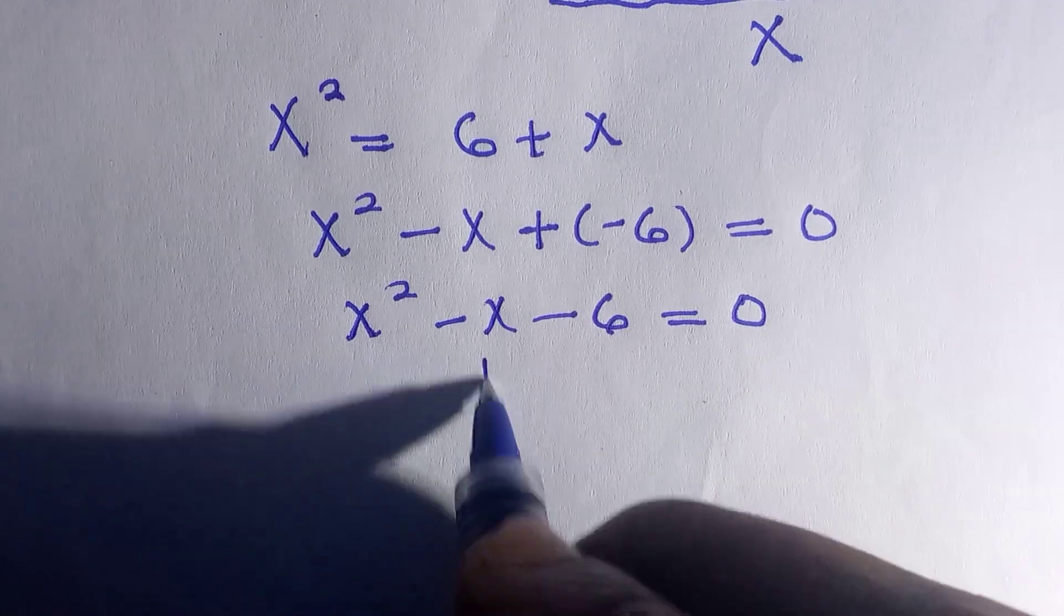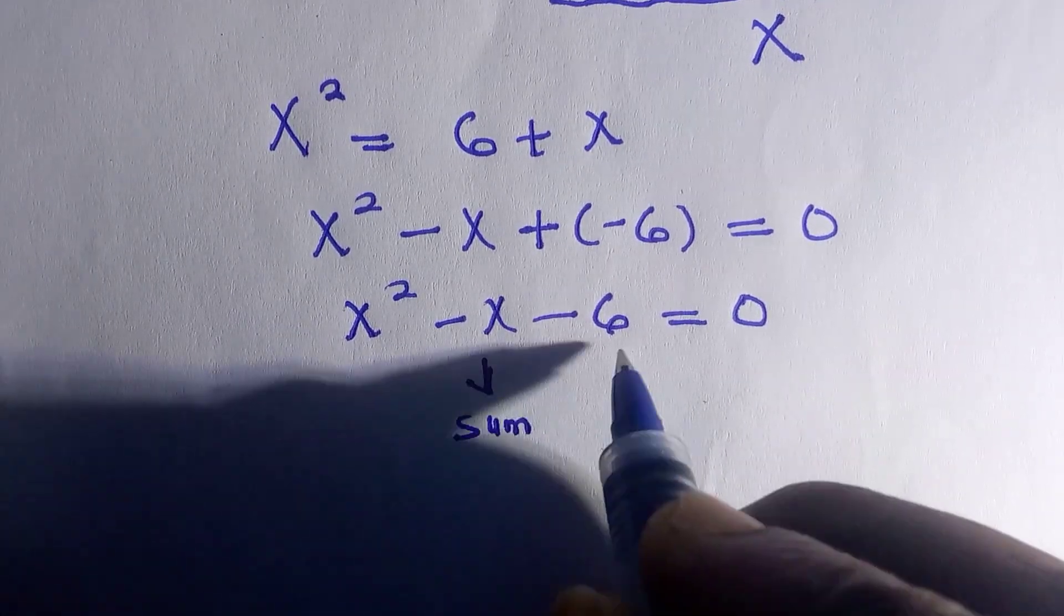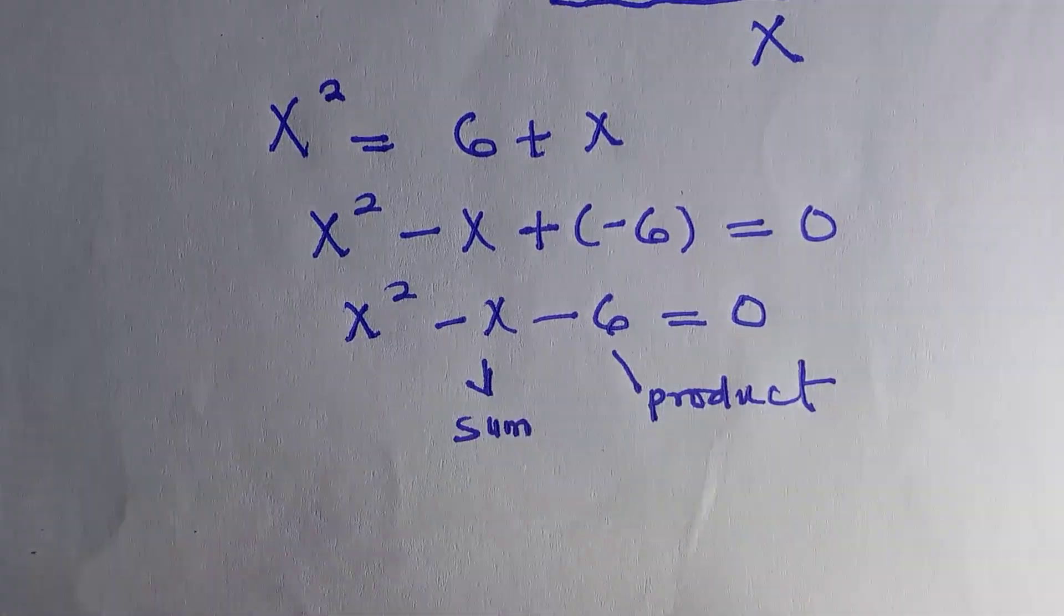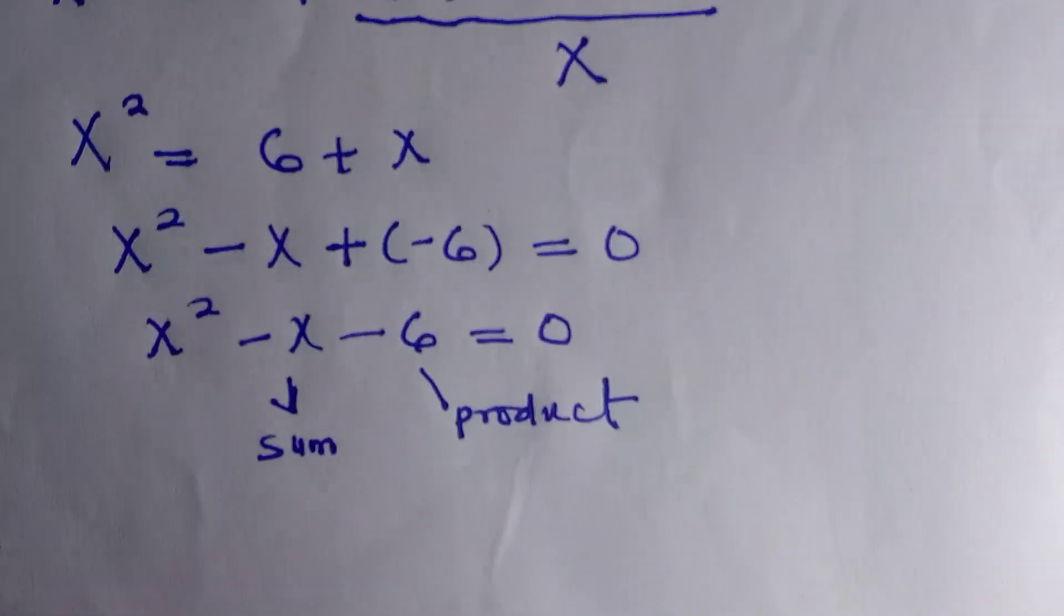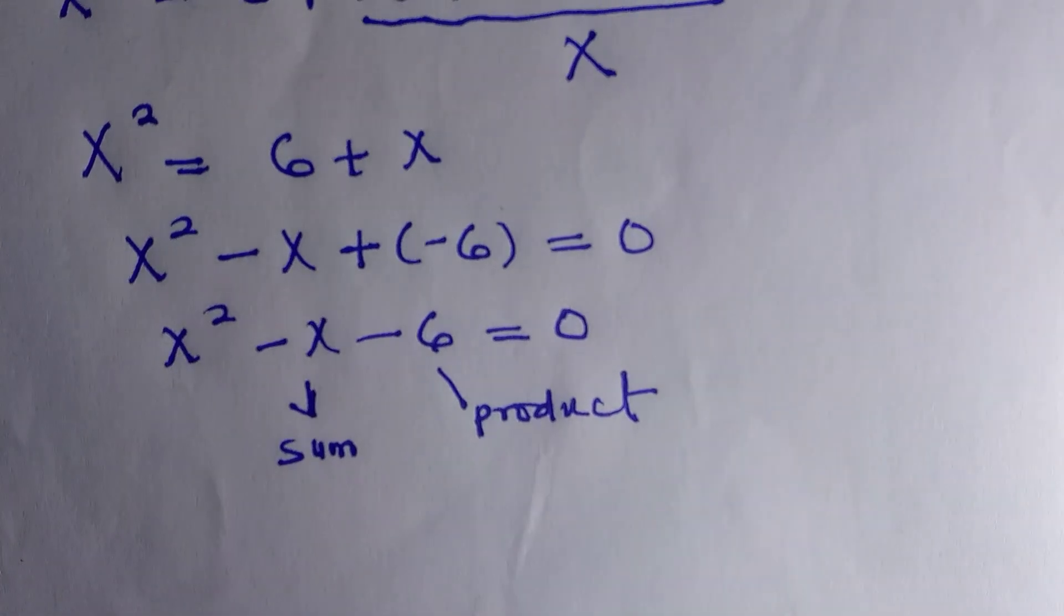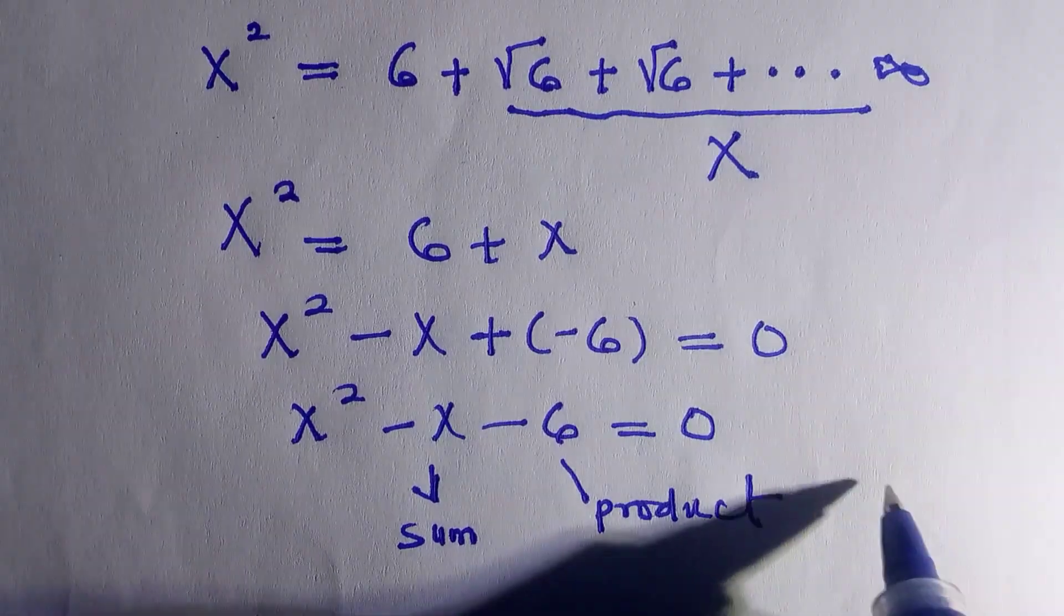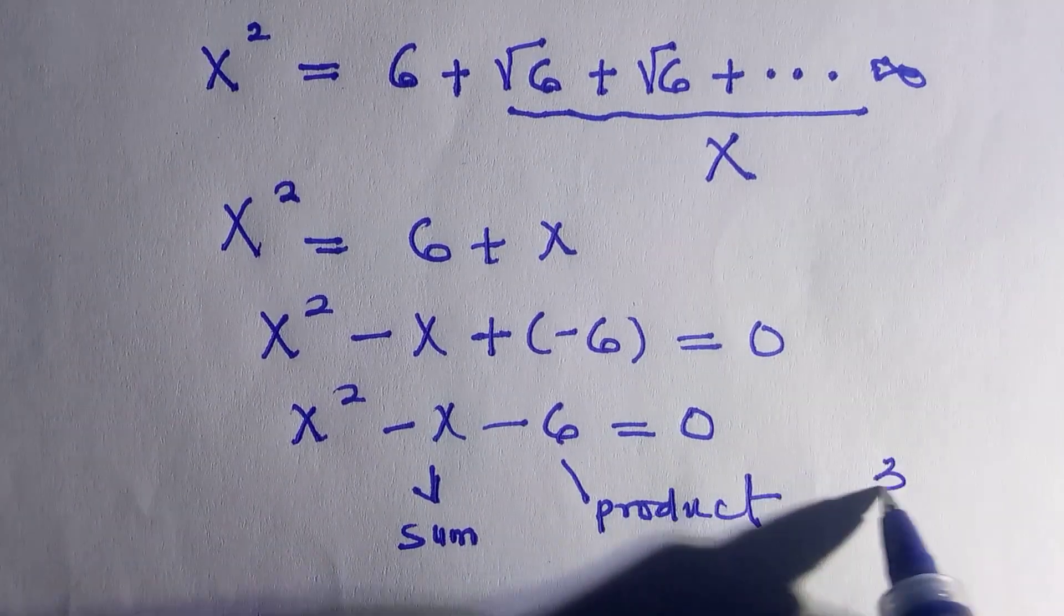The middle term here is known as sum of the root while this one is product of the root. We're going to look for two different numbers that if you add together it will give us minus one, and if you multiply it gives us minus six. The two values are three and two.